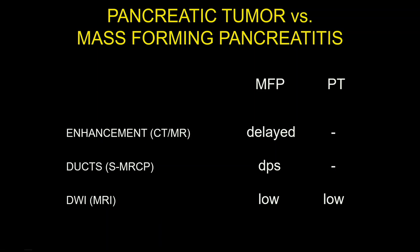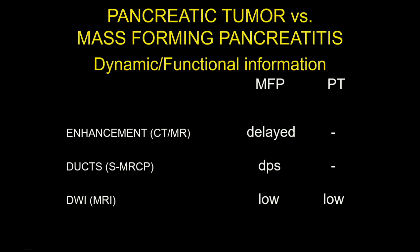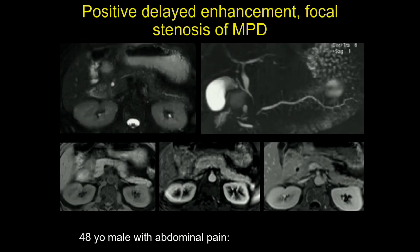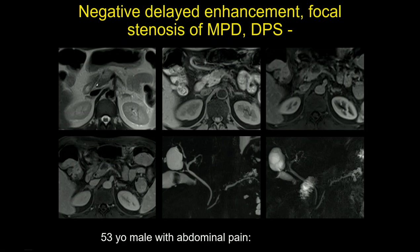DWI is less specific but provides functional information. Positive delayed enhancement in a patient with focal stenosis of the main pancreatic duct, with typical location and sharp margins, suggests paraduodenal pancreatitis. Another case showed a mass with positive delayed enhancement, focal stenosis of the main pancreatic duct, and homogeneous enhancement in the venous phase — this was chronic sclerosing pancreatitis. The lack of visualization of the Wirsung duct on secretin MRI suggests ductal adenocarcinoma.